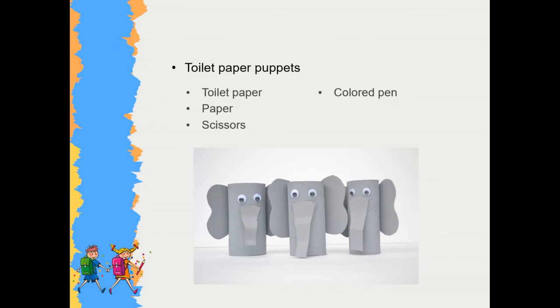For these puppets, we need finished toilet paper. We can paint it and we can add eyes and ears by using paper. Cut the paper in the shape of eyes and ears and stick them together. Our puppet is ready to use.